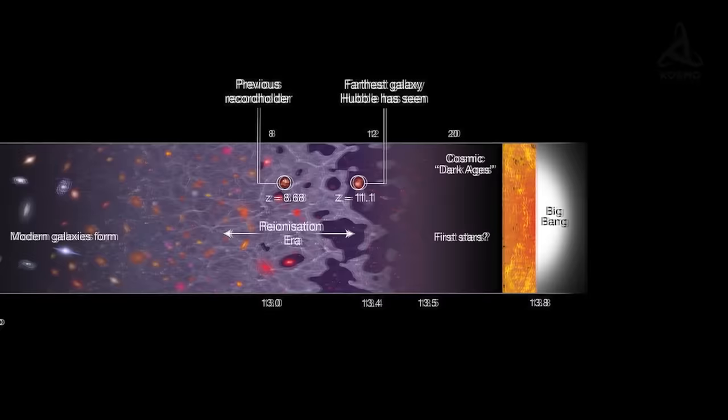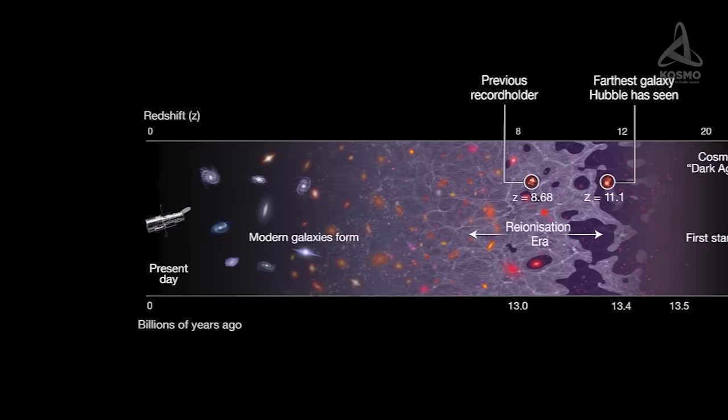However, due to the constant expansion of the Universe, today's distance to GNZ11 is approximately 32 billion light-years. One may argue that the speed with which it recedes exceeds the speed of light, but it does not clash with the special theory of relativity, as it isn't the matter that is receding, but the space between the two objects is growing larger.